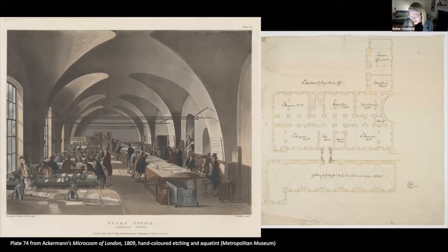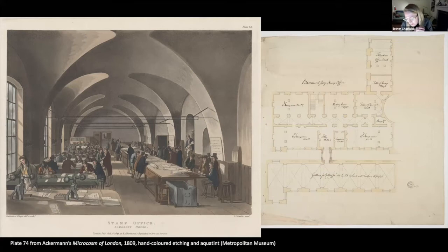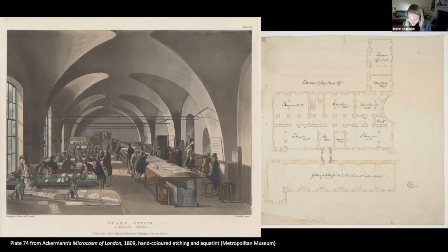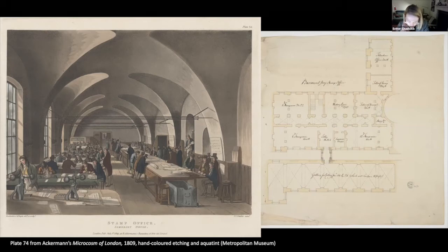A later observer wrote, after the stamp office had moved to a slightly different part of the Somerset House complex, that the pedestrians on the Victoria Embankment who note the clatter of mechanism behind the barred windows are listening to the process by which the state makes paper into gold. Like that dynamic embodied in the witnessed proof of the blind stamp discussed earlier, there's a politics of visibility and invisibility at play here — the stamp office as a site of surveillance and scrutiny that was at the same time hidden away in a basement out of public sight.